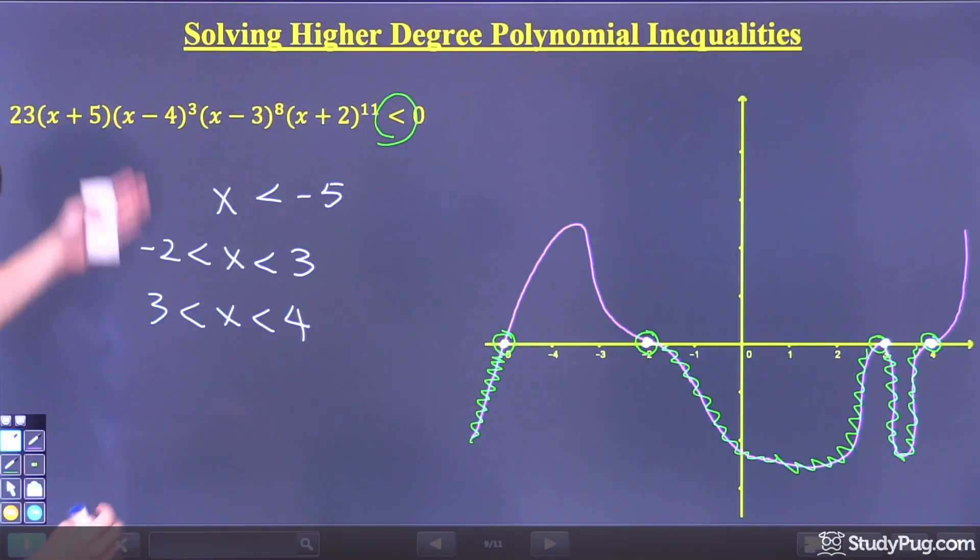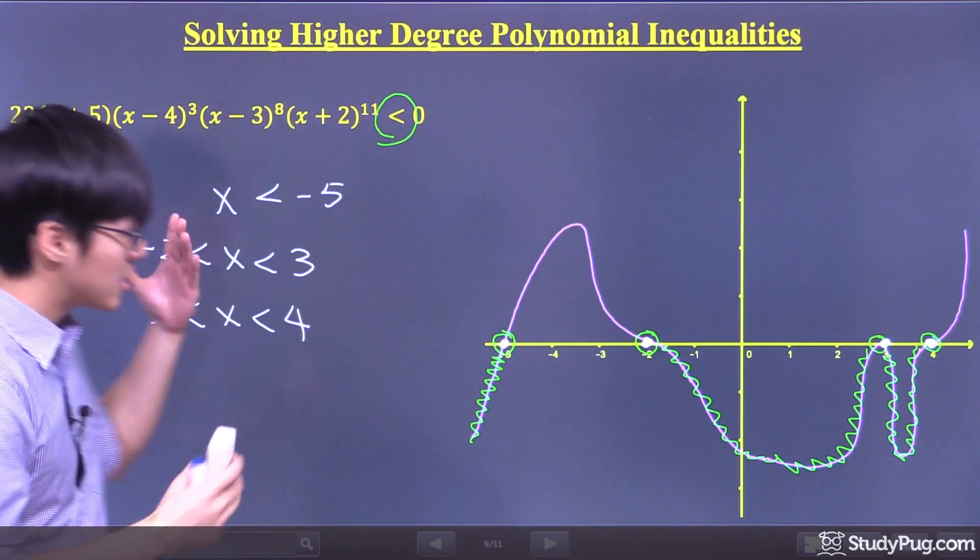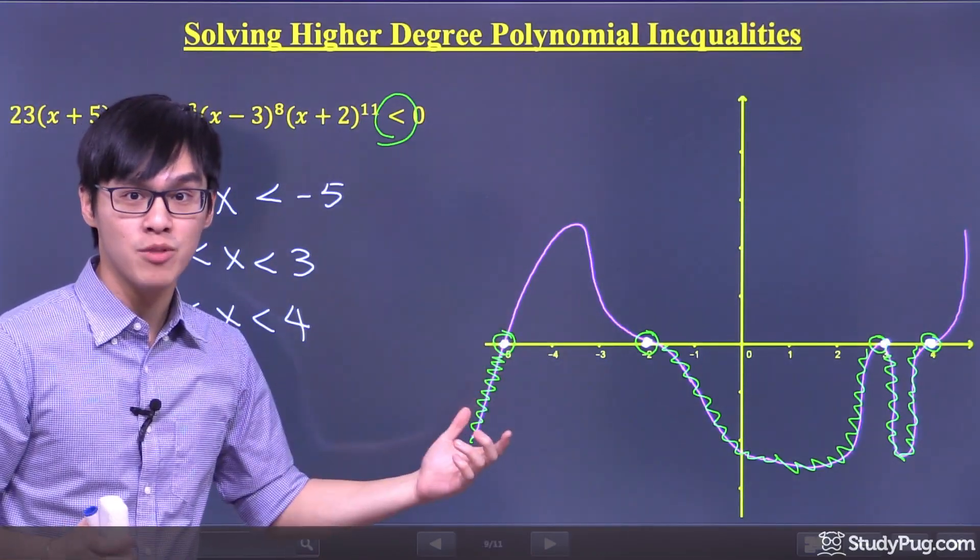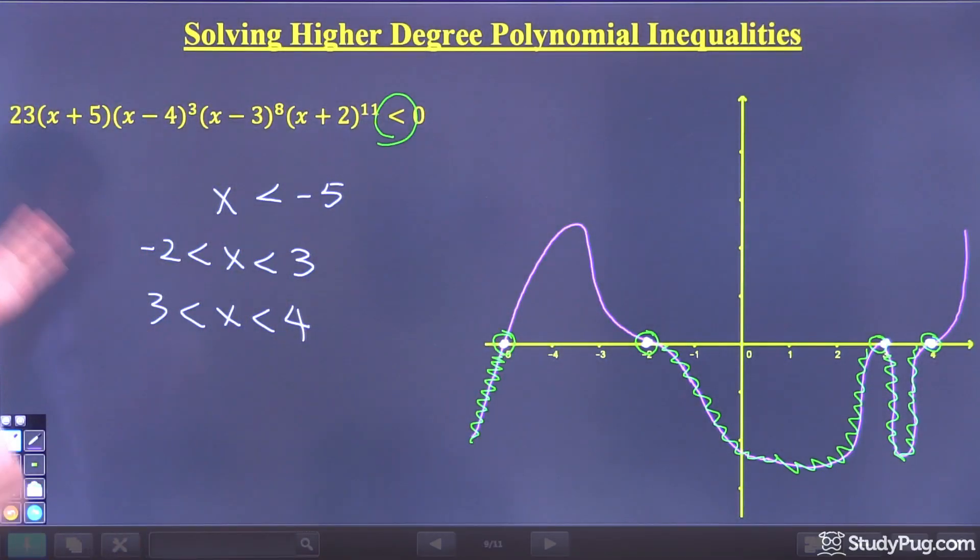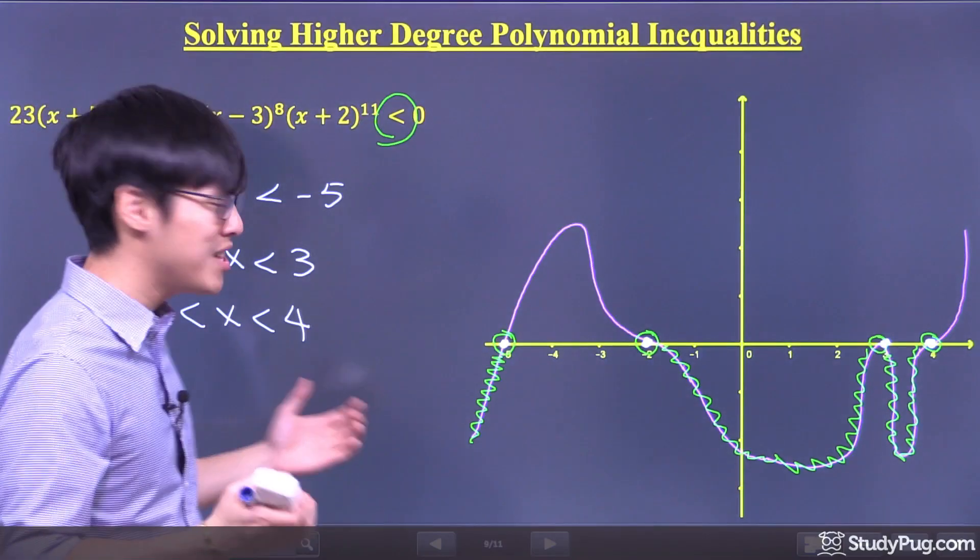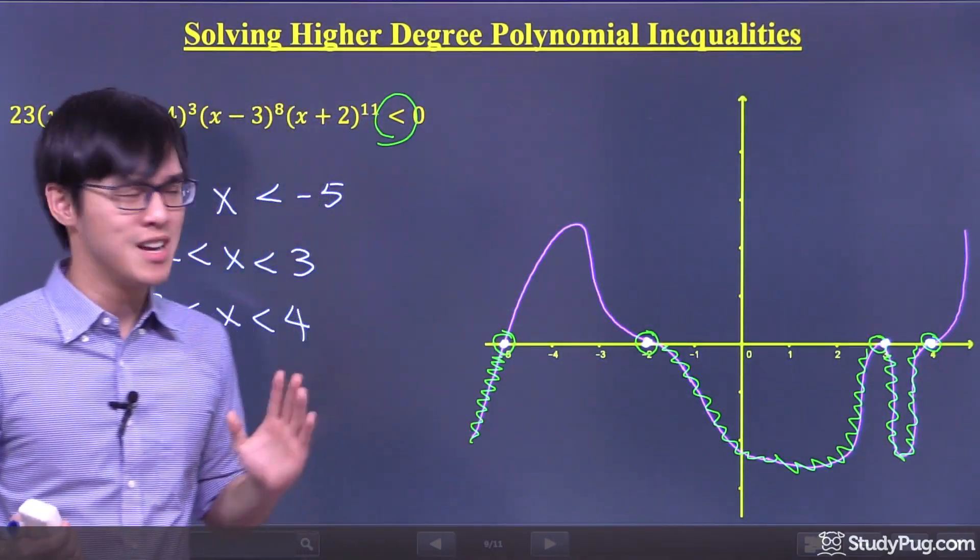That's how easy it is. Sketch your graph, look at the graph, find out the feasible region, and then write them down. That's all you have to do. It's really simple if you solve it graphically.